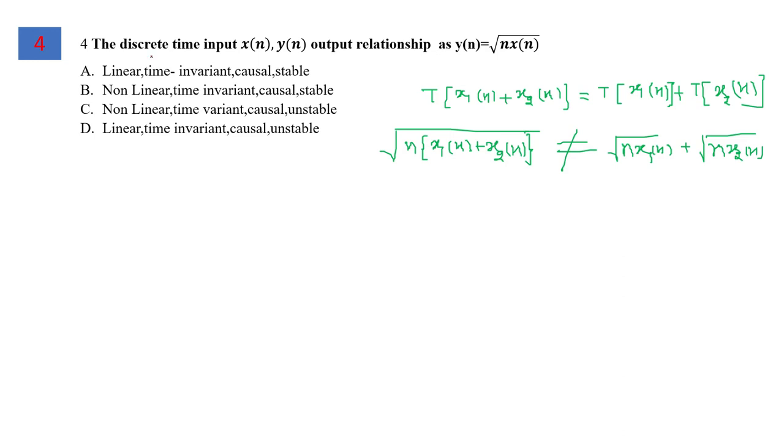For question number 4, the discrete time input x(n) and output y(n) are given by y(n) equals √(nx(n)). We need to comment on linearity, time invariance, causality, and stability. To test linearity, we apply the additivity test.